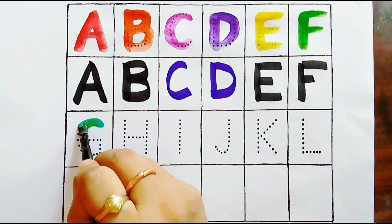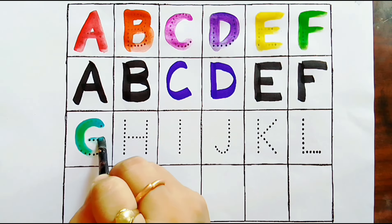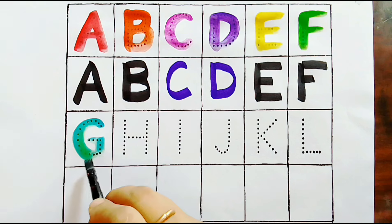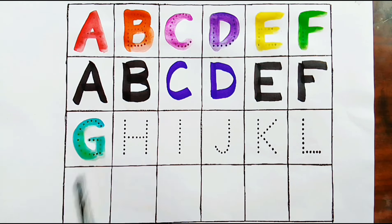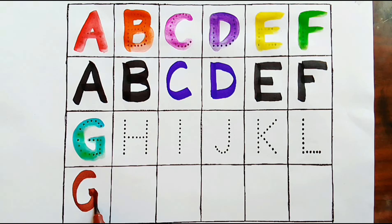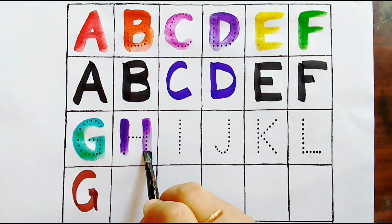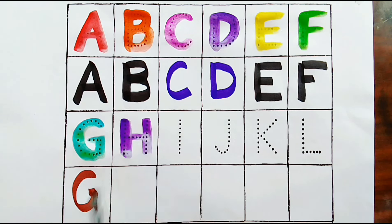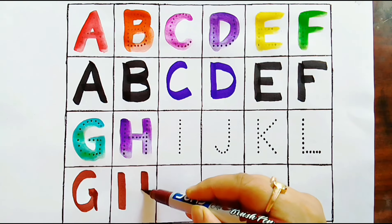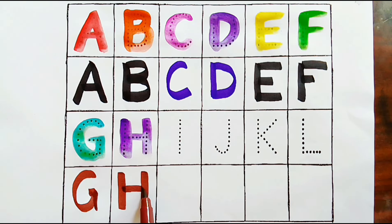Green color G. Brown color, G - G for grass. Violet color H. Brown color, H - H for house.